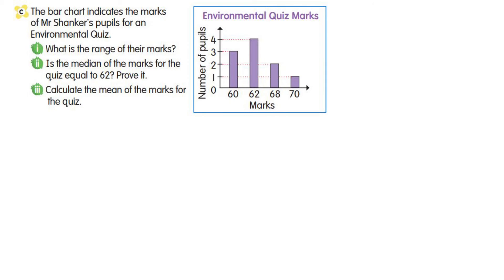Now look at example C. The bar chart indicates the marks of Mr. Shankar's pupils for an environmental quiz. What is the range of their marks? From the bar chart, the highest mark is 70 and the lowest mark is 60. So the range is 70 minus 60, which equals 10.